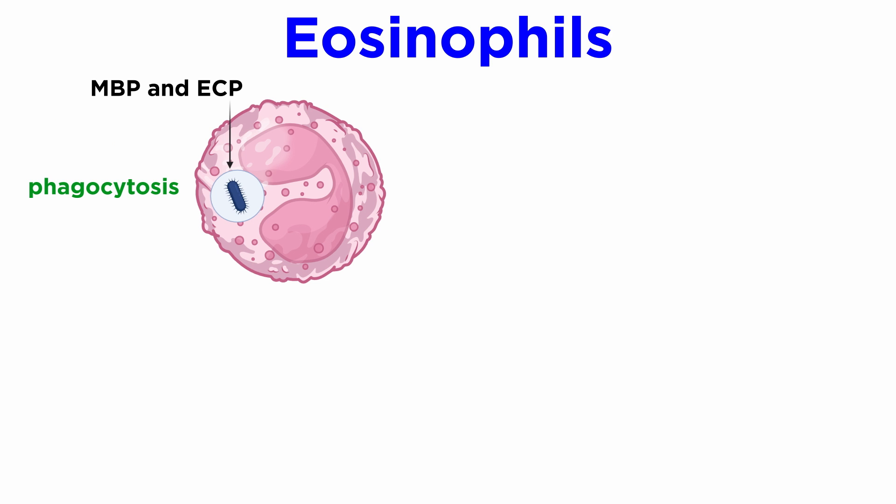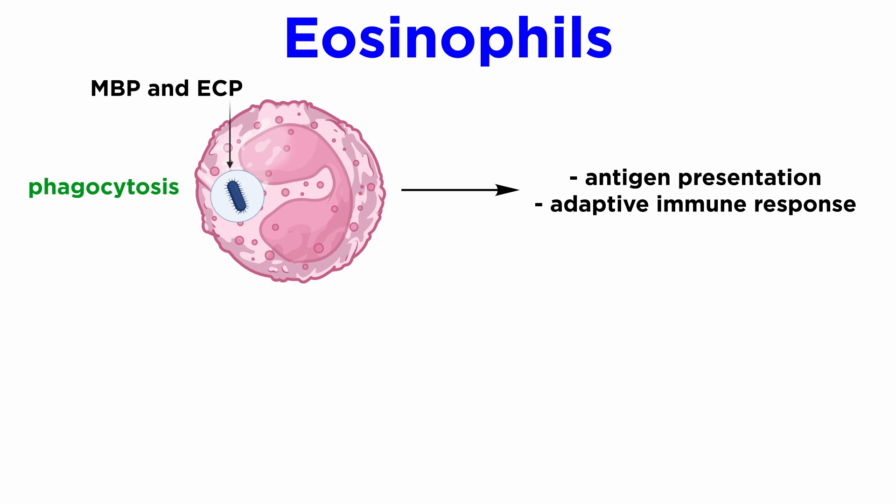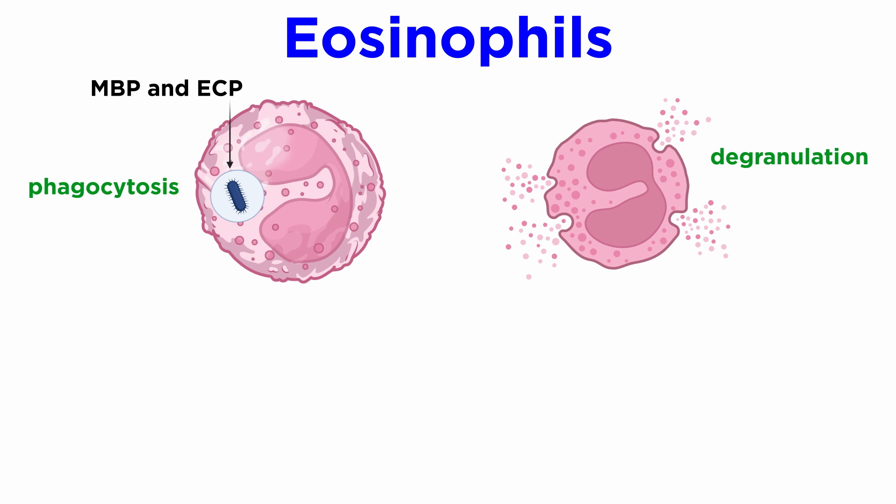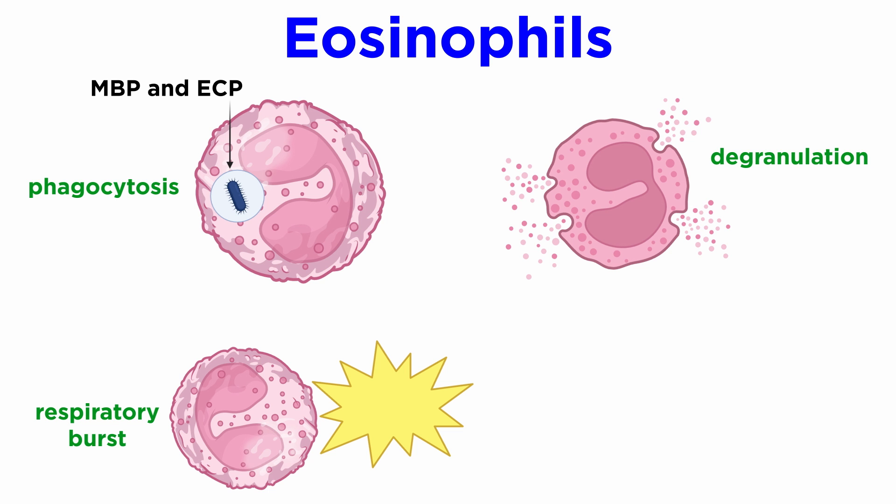Like neutrophils, but to a lesser degree, eosinophils are able to phagocytose invading pathogens and carry out intracellular killing by delivering MBP and ECP to intracellular phagosomes. This in turn paves the way for subsequent antigen presentation and mounting of the adaptive immune response. Additionally, eosinophils are endowed with extracellular killing mechanisms that include releasing cytotoxins through degranulation, performing a respiratory burst through EPO, as well as extracellular DNA trapping.